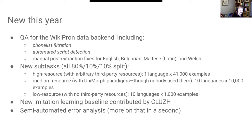In 2021, we did quite a few new things to improve the task. We did extensive quality assurance for the data backend from Wikipron: phone list filtration, automated script detection — which automatically filters things in different scripts. Previously we had to manually specify that Serbo-Croat could be written in both Cyrillic and Roman. We also did manual post-extraction fixes for English, Bulgarian, Maltese (the Latin version), and Welsh. We have a new baseline contributed by the Cluj team at the University of Zurich, and we also built automated error analysis tools.